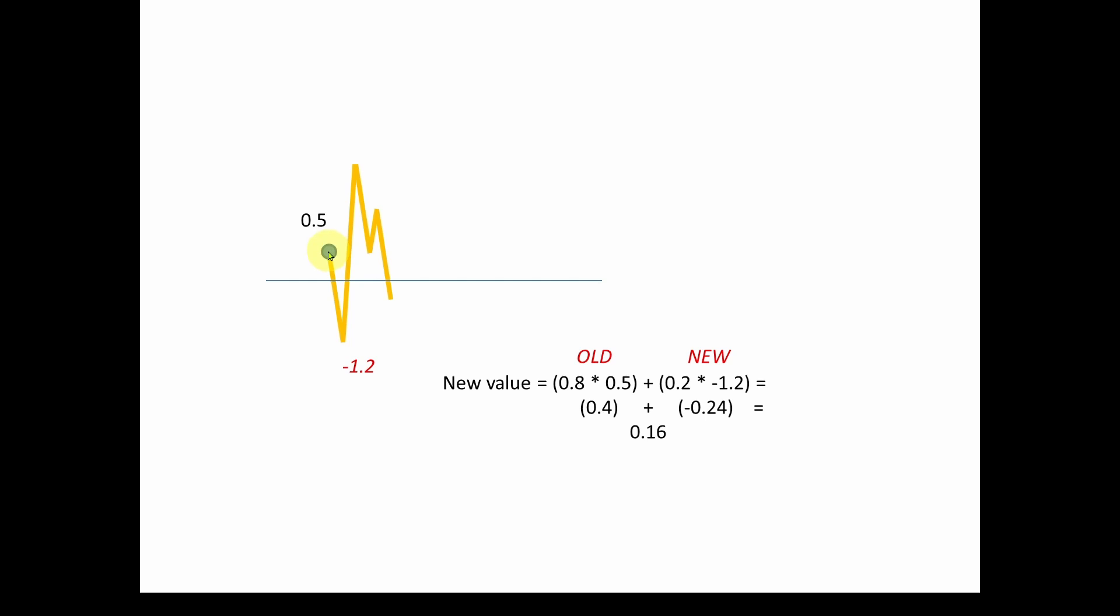Well, one way is you can do a very simple algorithm that kind of simulates a low-pass filter. And the way you do that is you take your present reading, in our case, a 0.5, and you put a lot of confidence in that, but you put a lot less confidence in the new reading because you know it's going to be,